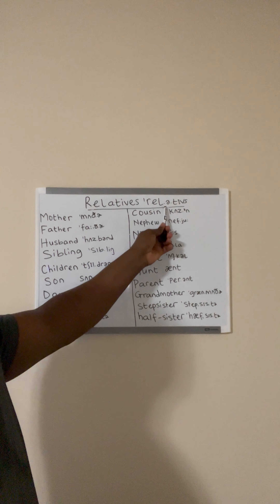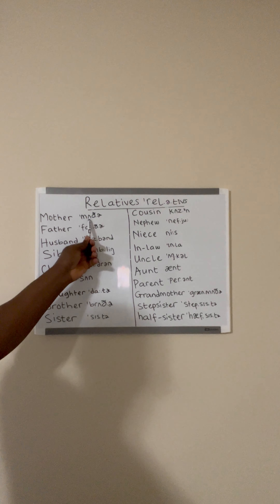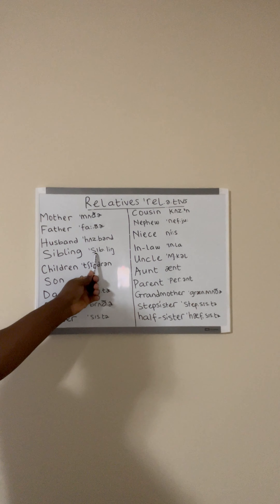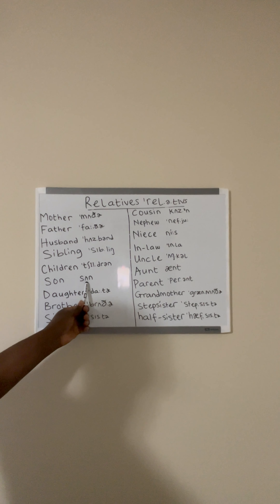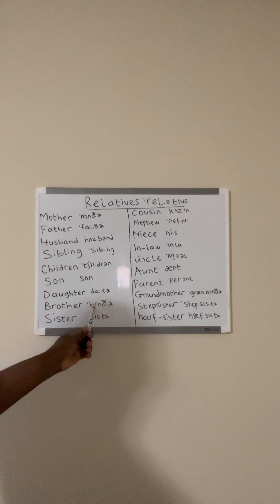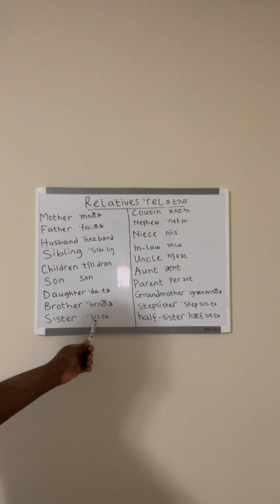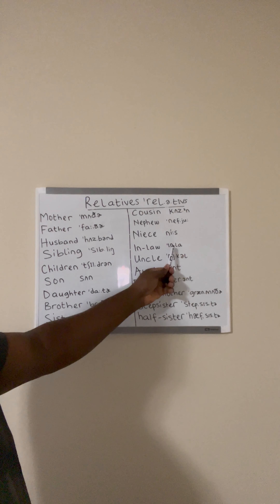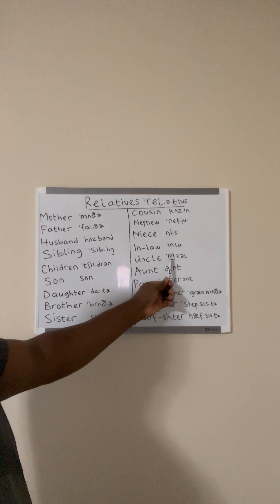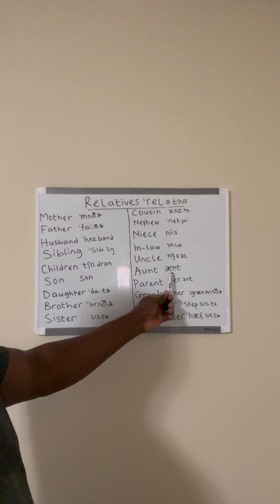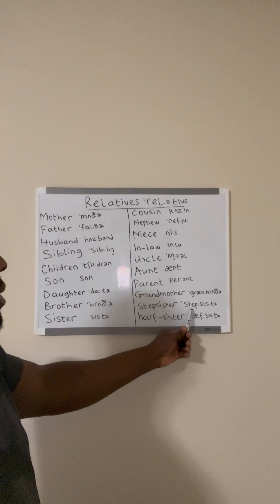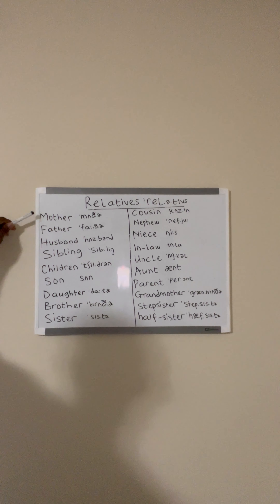I've heard some people say 'relatives' with a soft T, but here we're going to keep it as 'relatives.' Now let's go through the vocabulary: mother, father, husband, sibling, children, son, daughter, brother, sister, cousin, nephew, niece, in-law, uncle, aunt — or you might hear some people say 'aunt' — parent, grandmother, step-sister, half-sister.